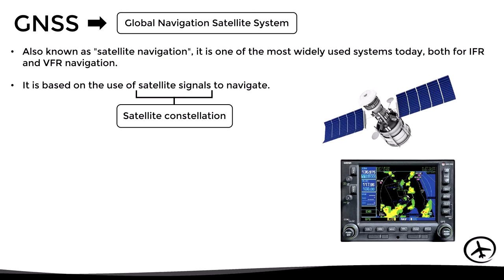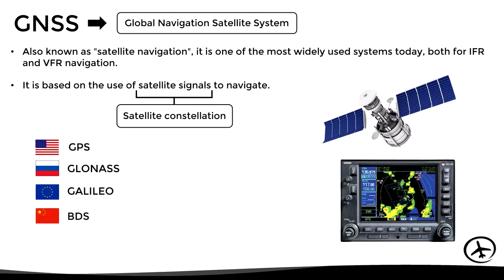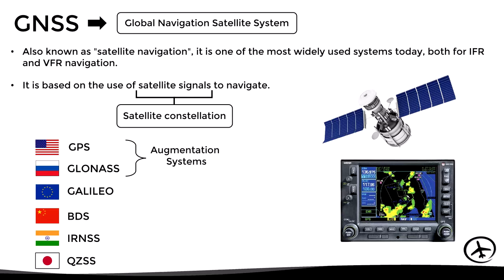It is important to mention that there is more than one GNSS system, so each one has its own satellite constellation. One of the best known worldwide is GPS, which is managed by the United States. However, there are other GNSS systems such as GLONASS from Russia, Galileo from the European Union, BeiDou from China, IRNSS from India, and QZSS from Japan. Both GPS and GLONASS have augmentation systems that increase the accuracy and reliability. These augmentation systems can be ground-based, aircraft-based, or satellite-based.